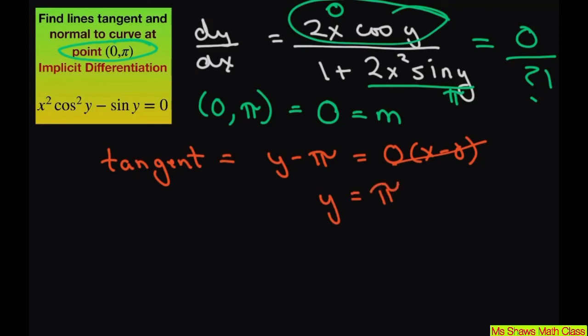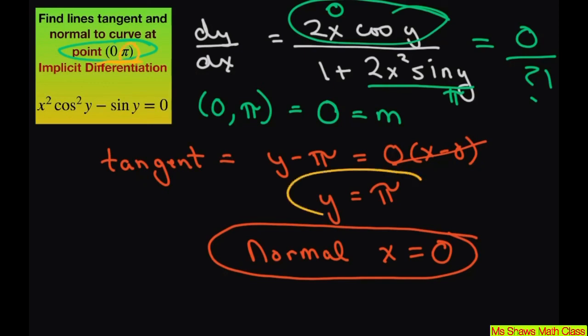And then for the normal, that's just going to be x = 0 because you're just doing the negative reciprocal. Basically, when you have a slope of 0, and this is the point you're looking at, your y was π. There it is. And your x is 0. There it is. For the normal.